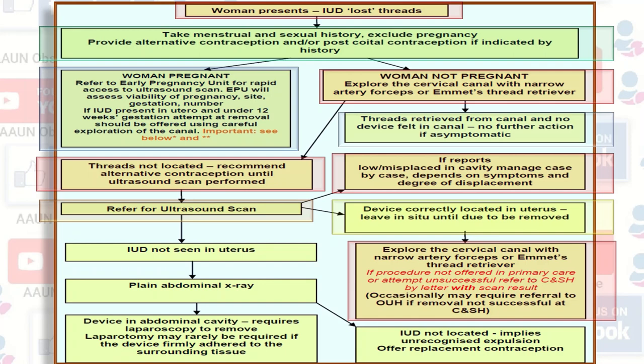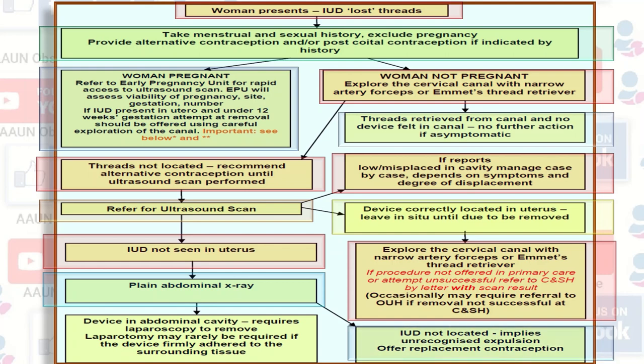If on ultrasound the IUCD is not seen in the uterus, offer a plain abdominal X-ray. If the IUCD is not located on X-ray, this implies unrecognized expulsion and replacement contraception should be offered. If the device is found in the abdominal cavity on X-ray, laparoscopy is required for removal. Laparotomy may rarely be required if the device is firmly adherent to surrounding tissues.